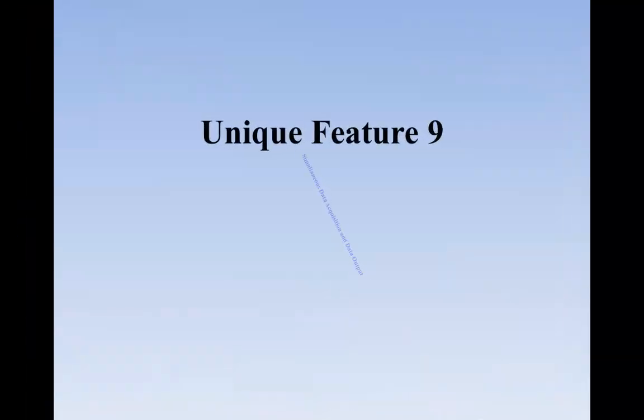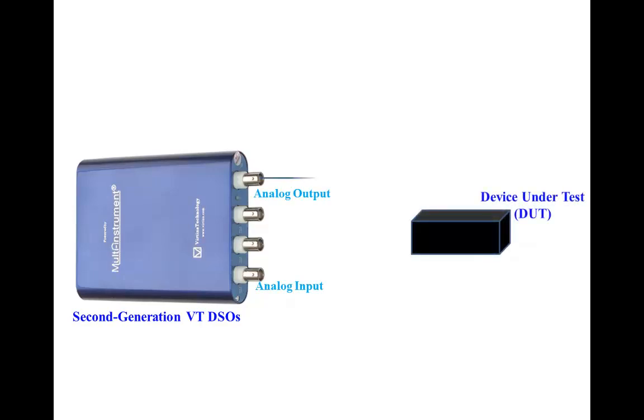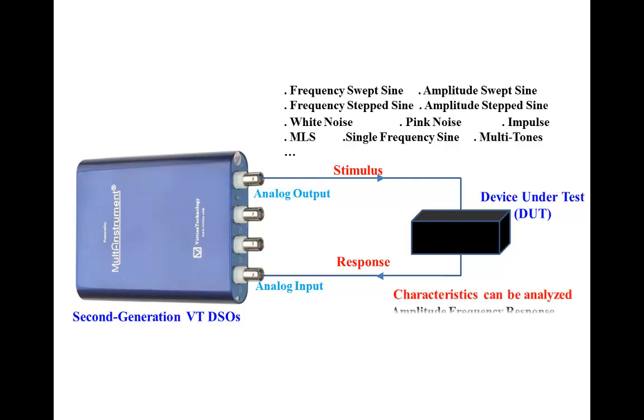Unique Feature 9: Simultaneous data acquisition and data output. The oscilloscope and signal generator of a second-generation VT DSO can work simultaneously. You can generate a stimulus to the device under test, or DUT, and acquire the response from that device at the same time. You can even configure a sequence of steps to generate different stimuli and analyze the different responses. The stimuli can be frequency swept sine, amplitude swept sine, frequency step sine, amplitude step sine, white noise, pink noise, impulse, maximum length sequence, single frequency sine, or multi-tones. The DUT characteristics that can be analyzed include amplitude frequency response, transfer function, impedance, distortion, signal-to-noise ratio, etc.